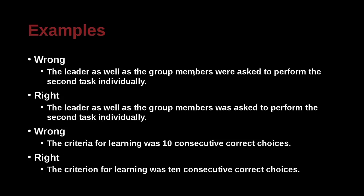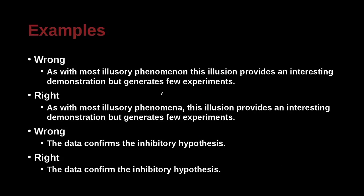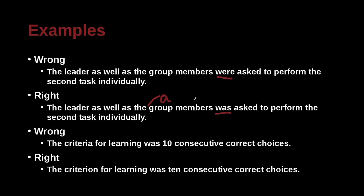'The leader as well as the group members were asked to perform the second task individually' — the correct version is 'the leader as well as the group members was asked.' This is a little harder. Even though it's the leader and group members, they function as a single group. As a group, they are singular — so it's 'was,' not 'were,' because they're all together in one group.